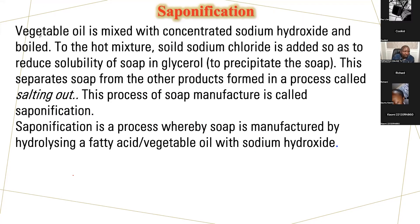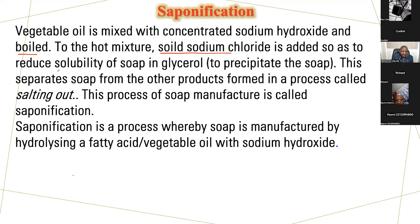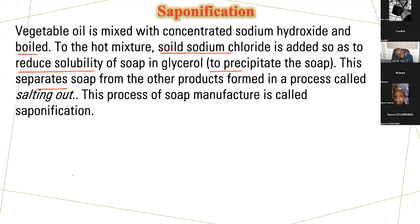To prepare soap through saponification, vegetable oil is mixed with concentrated sodium hydroxide and boiled. You then add solid sodium chloride to reduce the solubility of soap in glycerol, causing the soap to precipitate. This separates the soap from other products formed, in a process called salting out.